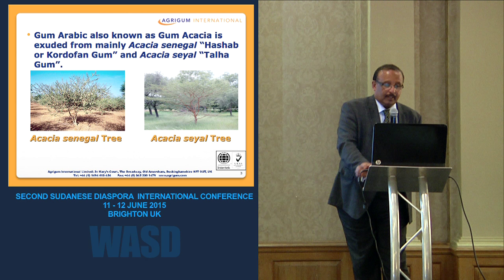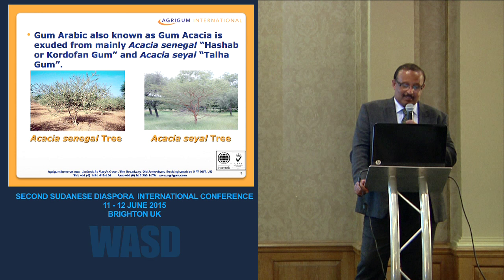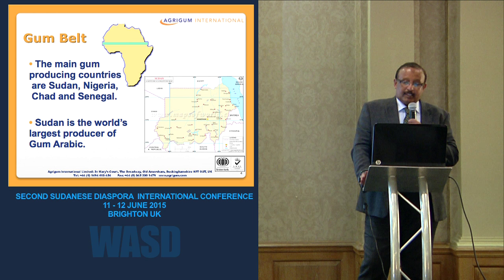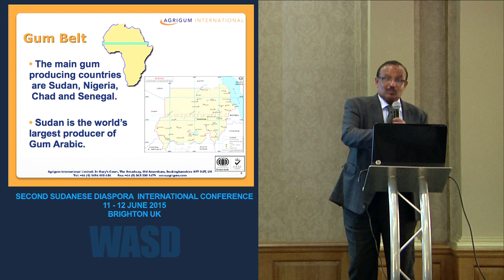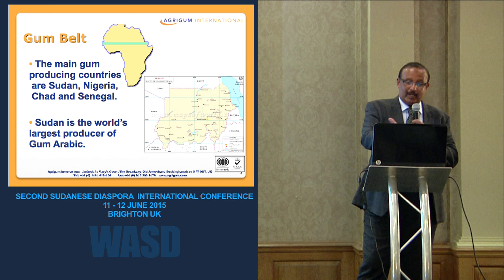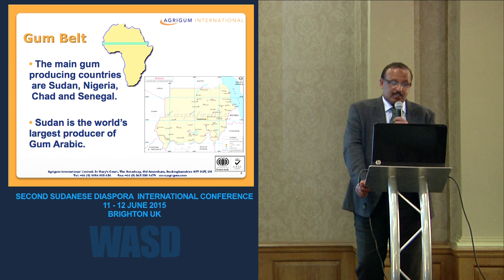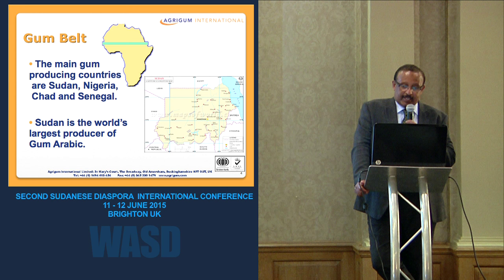This is the Acacia Sayal tree on the left, and the Acacia Senegal tree on the right. The African map shows a green strip indicating roughly where most of the gum Arabic is produced. The main producing countries are Sudan, Nigeria, Chad, and Senegal.